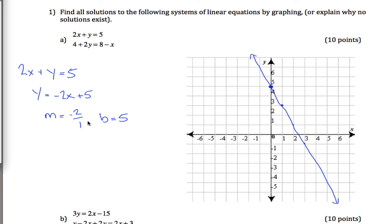And now repeat. Do that same thing again, except for your other equation. So I got 4 plus 2y equals 8 minus x. Again, I want to solve for y, so all my y's are on this side of the equation. So if I subtract 4 from both sides, I get 2y equals 4 minus x, which isn't quite what I want.